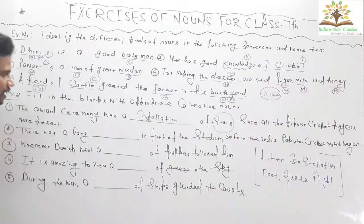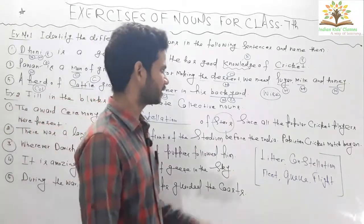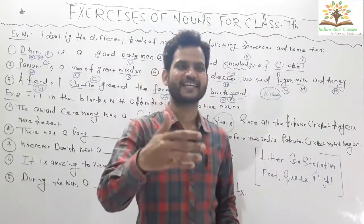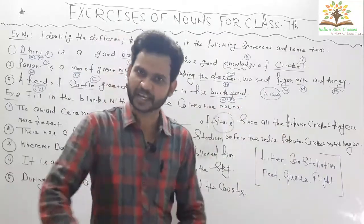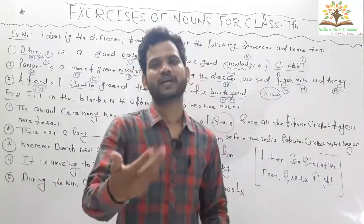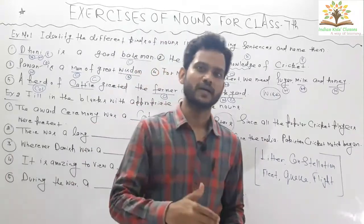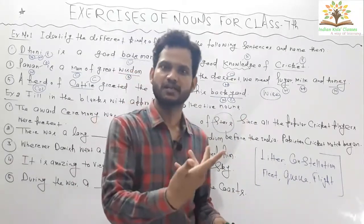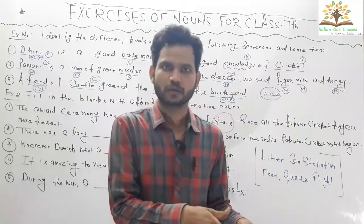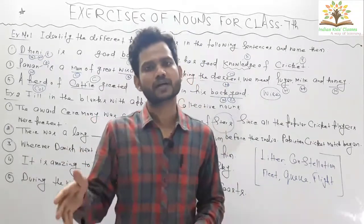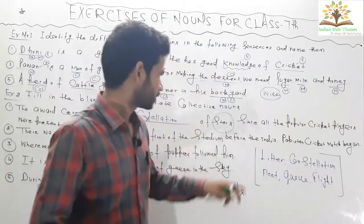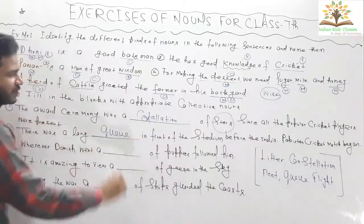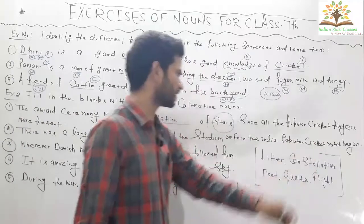Question number two: 'There was a long ___ in front of the stadium before the India–Pakistan cricket match.' Whenever you go in front of a stadium, you make a queue to go inside. Similarly, at an ATM during a rush you stand in a queue. So your answer is queue — there was a long queue in front of the stadium.